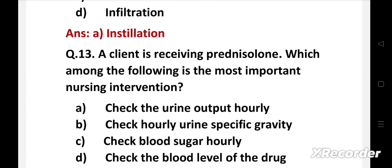Next question. A client is receiving prednisolone. Which among the following is the most important nursing intervention? Option A: Check the urine output hourly. B: Check hourly urine specific gravity. C: Check blood sugar hourly. D: Check the blood level of the drug.